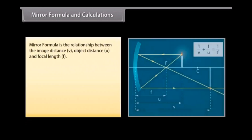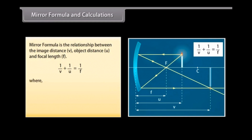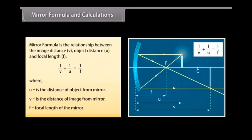The mirror formula is the relationship between the image distance V, object distance U, and focal length F. Here, U is the distance of the object from the mirror, V is the distance of the image from the mirror, and F is the focal length of the mirror.